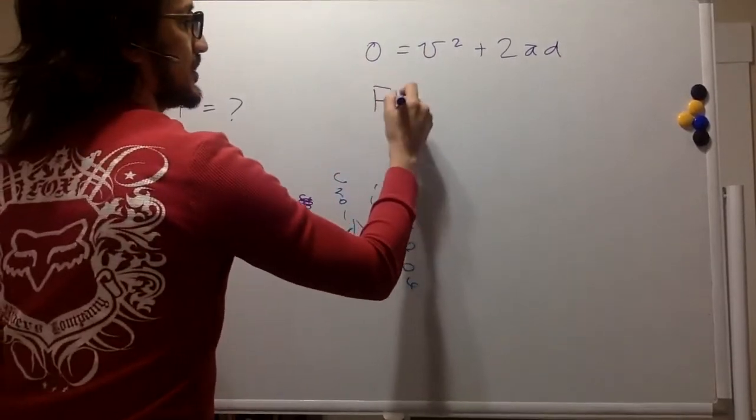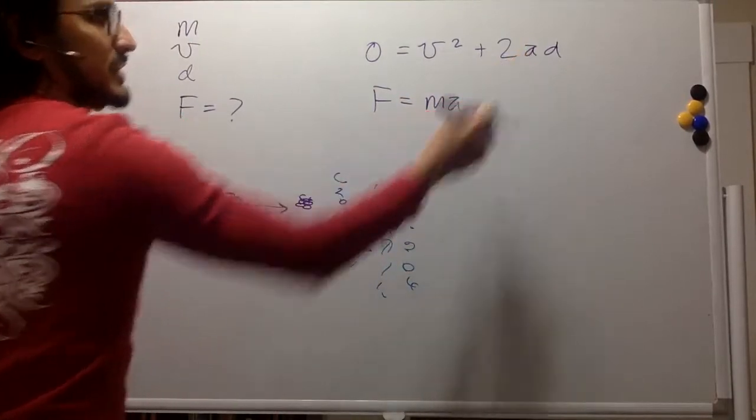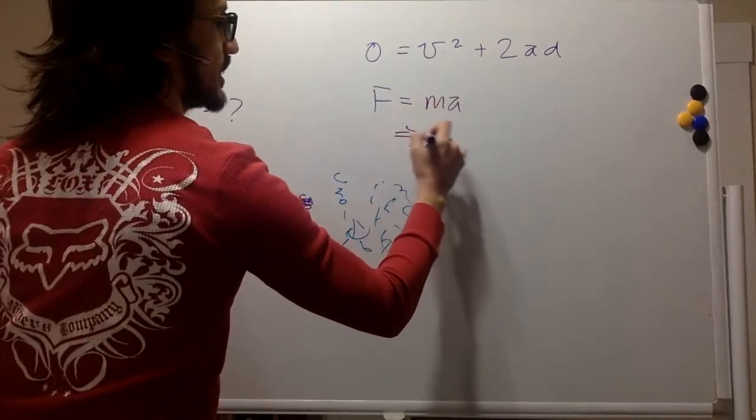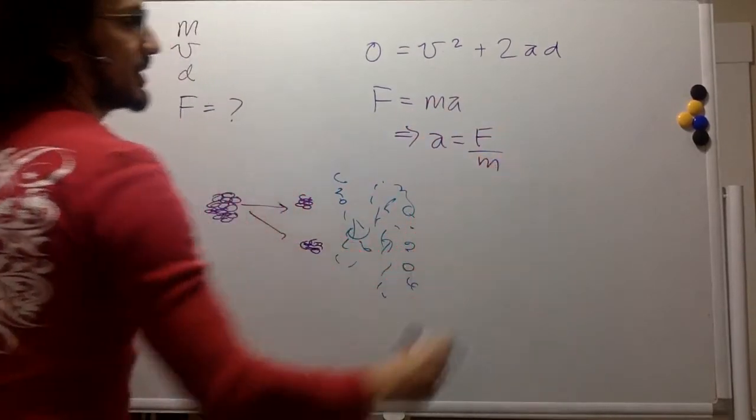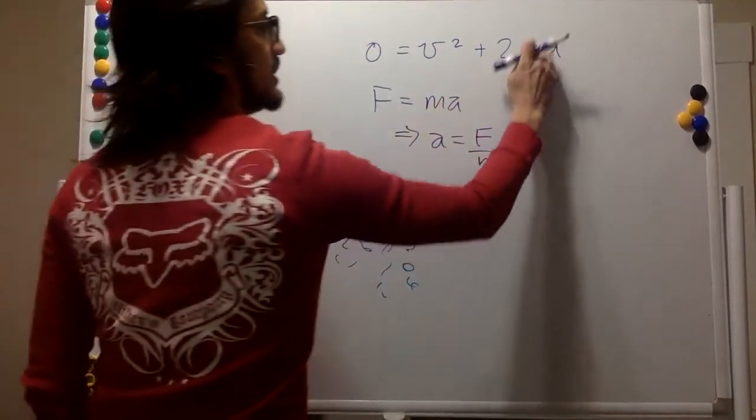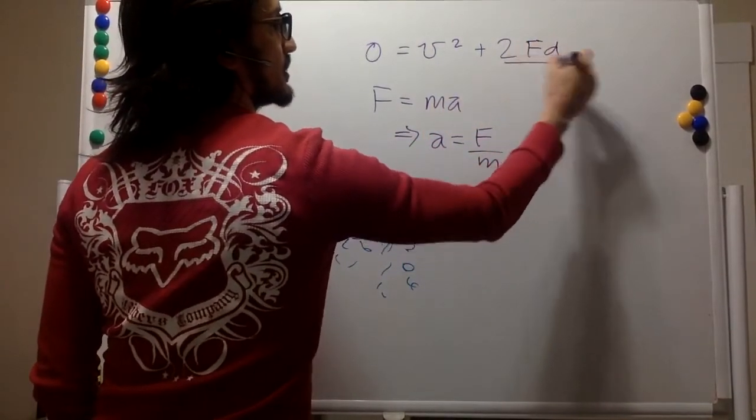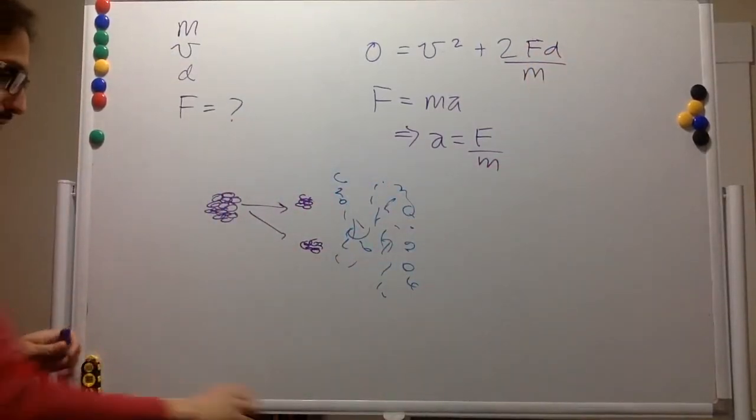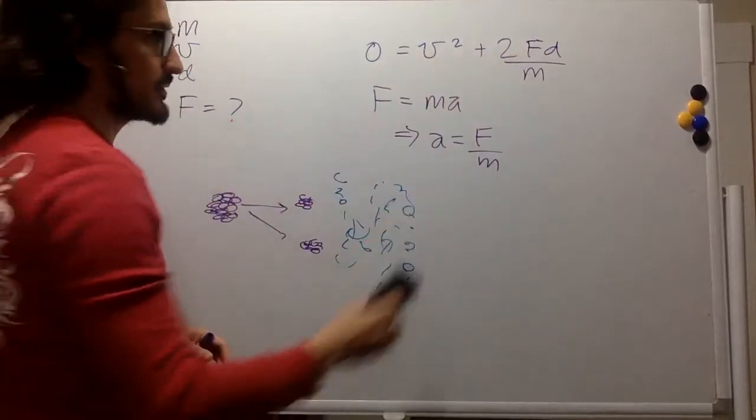Remember that force equals mass times acceleration. And we have the acceleration over there. So this implies that the acceleration is force divided by mass. So we can just put it in here. This is going to be force and we divide the whole thing by mass.